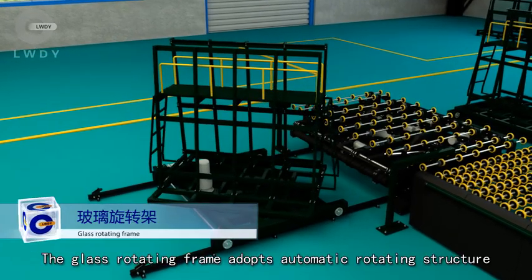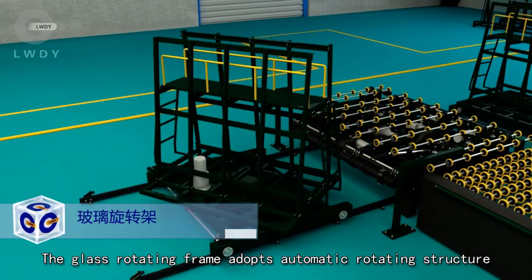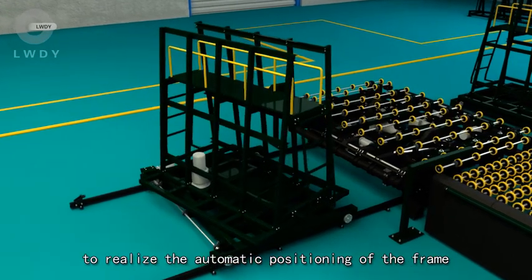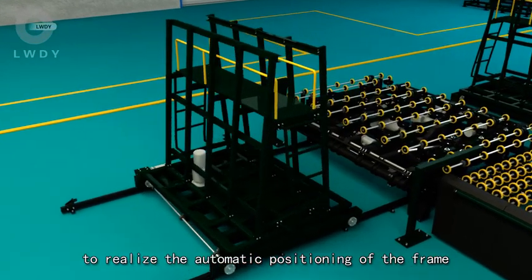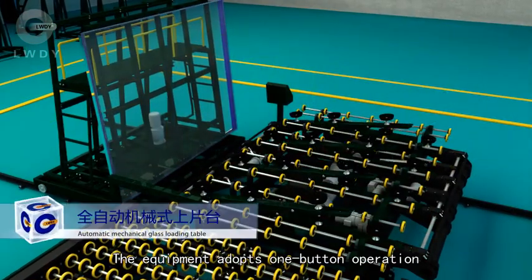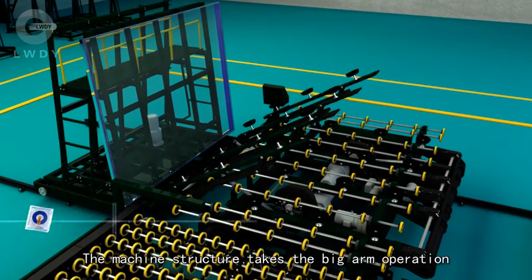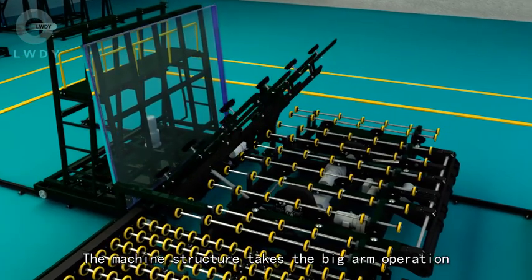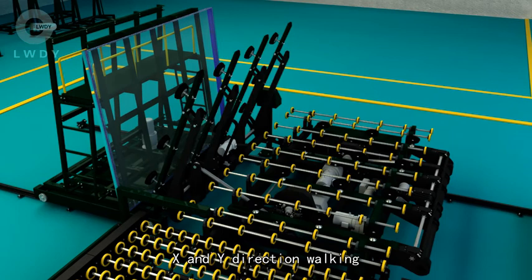The glass rotating frame adopts automatic rotating structure to realize automatic positioning of the frame. The equipment adopts non-button operation to run automatically. The machine structure takes the big arm operation, X and Y direction walking.